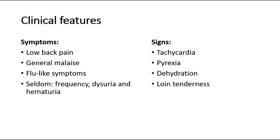The signs for UTI in pregnancy on examination include vital signs such as tachycardia and also pyrexia where there is fever, signs of dehydration, and loin tenderness may be present.